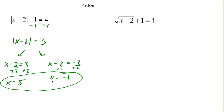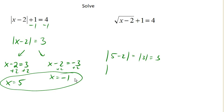Let's quickly double check them. The absolute value of 5 minus 2: 5 minus 2 is 3, and the absolute value of 3 is 3. If I plug in negative 1 for x, negative 1 minus 2 is negative 3, and the absolute value of negative 3 is 3. So both of our answers check here.